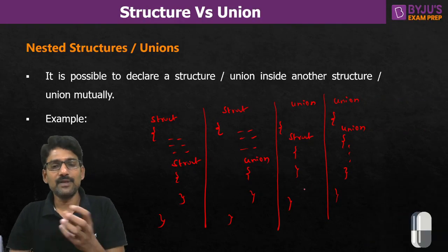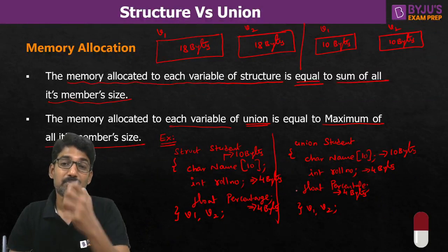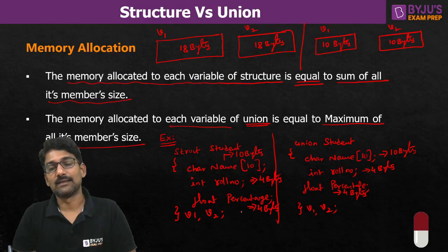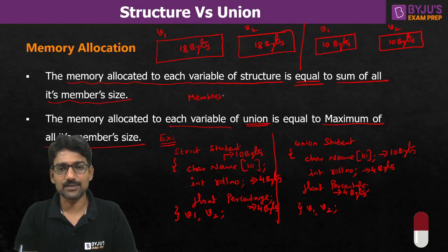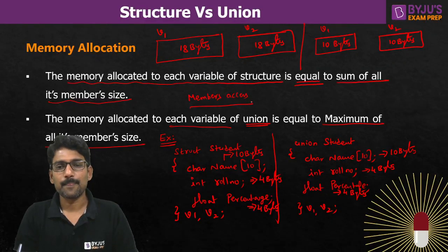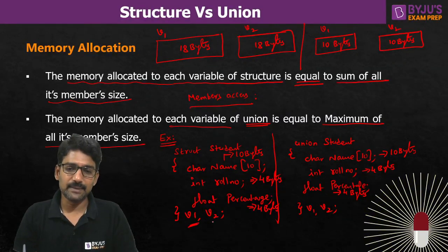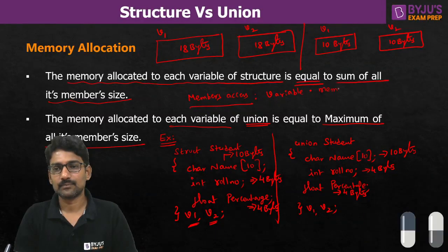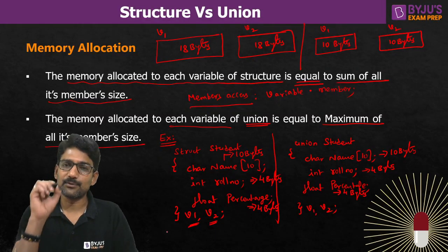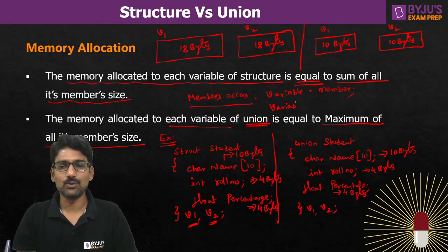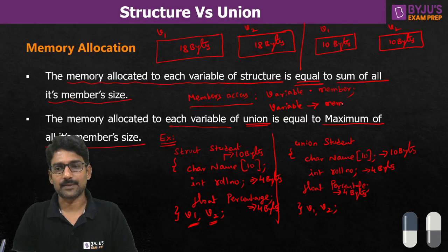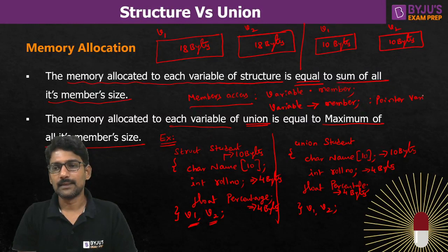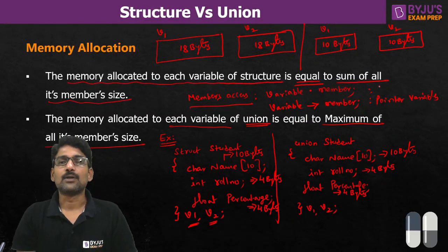When we have nested types, member access is always through a variable. To access members of either a structure or union, if the variable is a normal variable, we access through the dot operator. If the variable is a pointer variable, then we access through the arrow operator (->). This applies to both structures and unions.